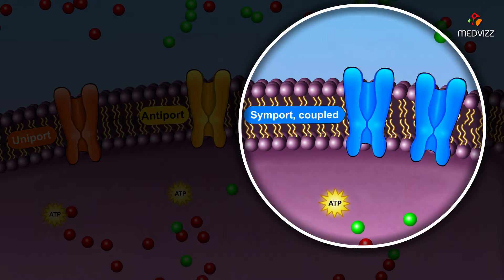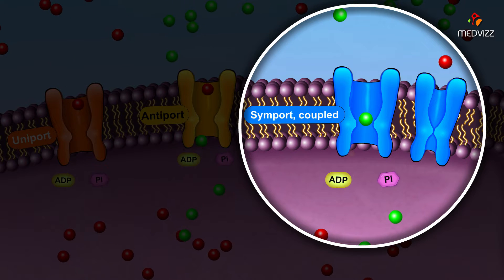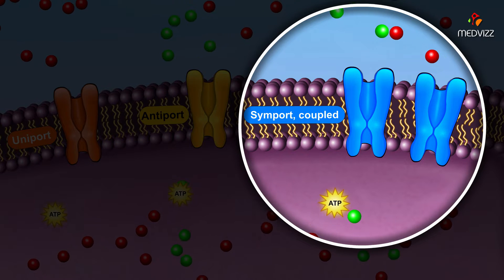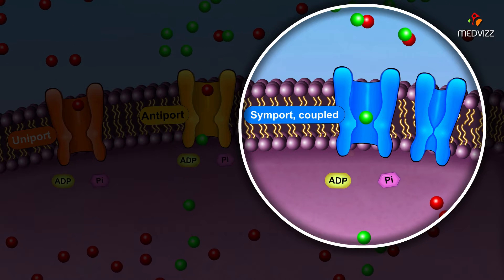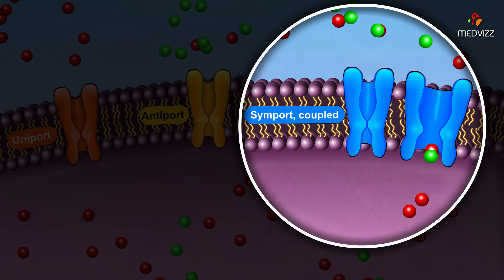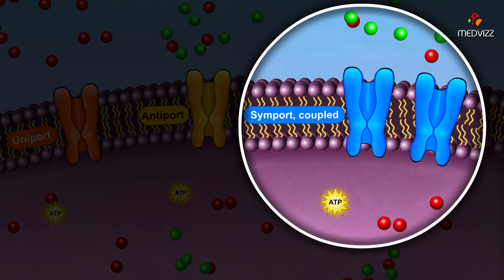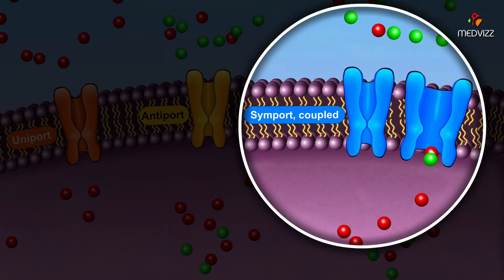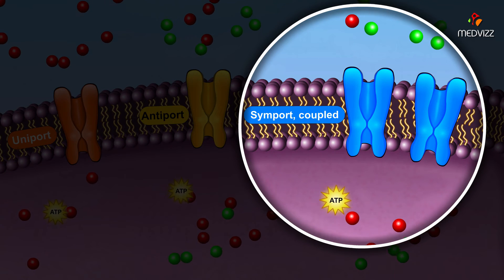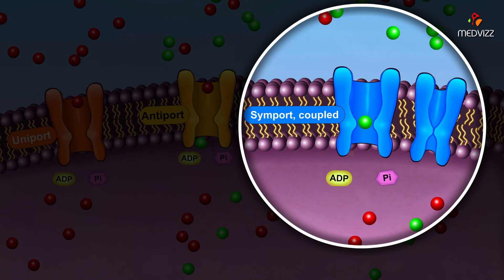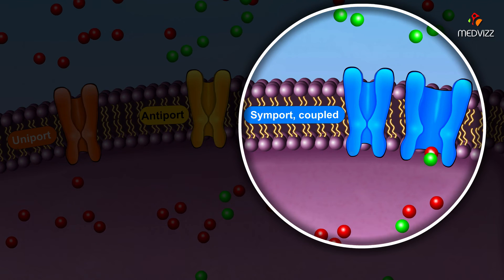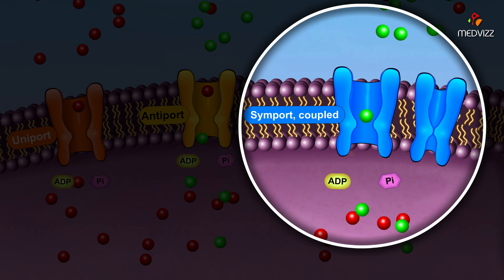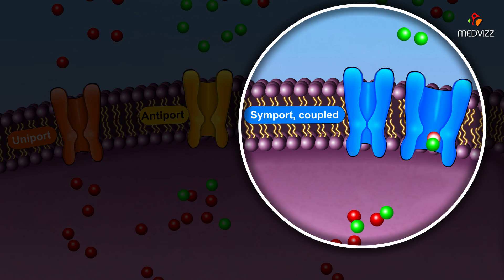A symport is an active transport protein that transports two different molecules across the cell membrane at the same time. In this case, it's coupled with a uniport channel that uses ATP to actively transport a molecule against its concentration gradient. When those same molecules are in high concentration outside the cell, their diffusion back into the cell provides energy to transport a different molecule against its concentration gradient through the symport.